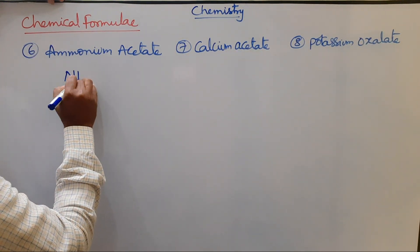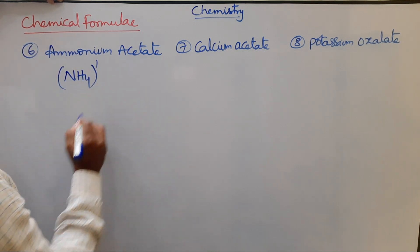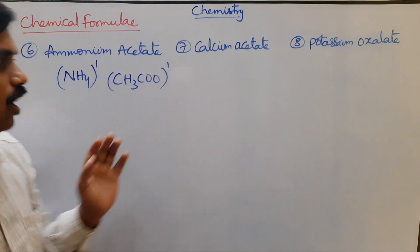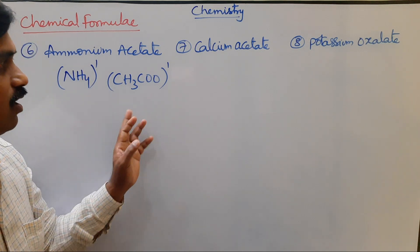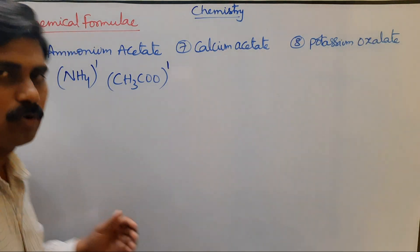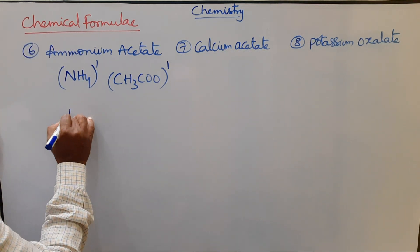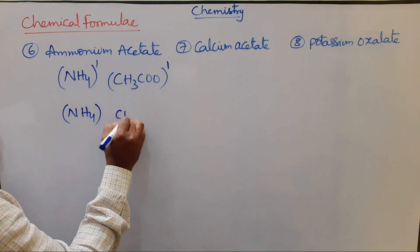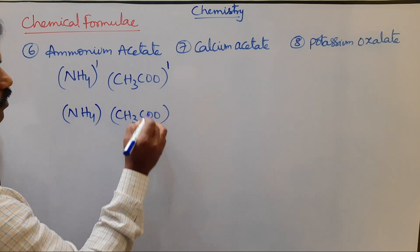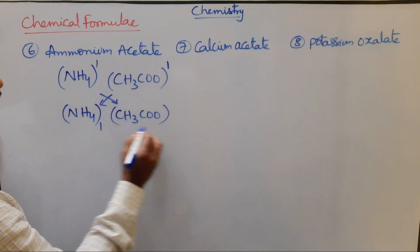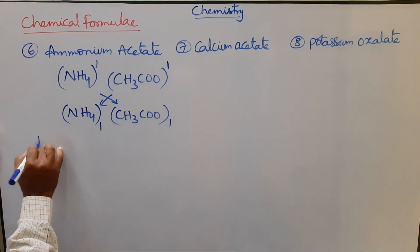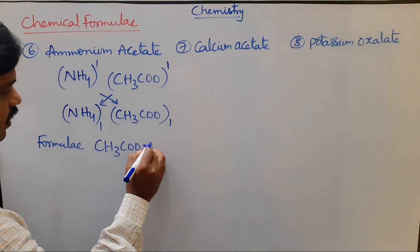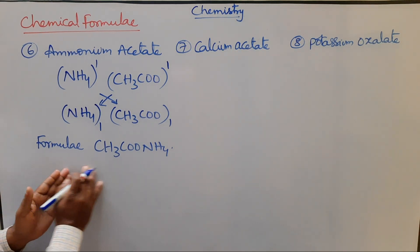Example: ammonium acetate. Ammonium radical ion NH₄⁺ has charge 1, and acetate ion CH₃COO⁻ also has charge 1. Both ions carry mono charges. Criss-crossing the charges gives 1 and 1, so the formula for ammonium acetate is simply NH₄CH₃COO.